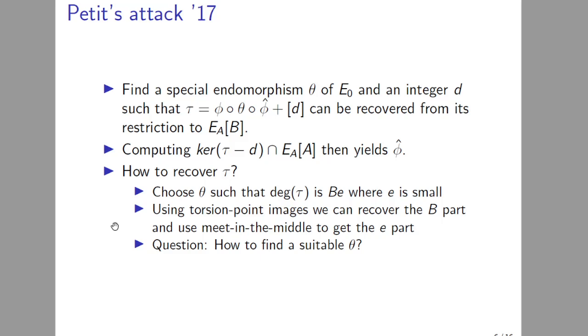The first attack which exploits this extra information was by Petit at 2017 Asiacrypt. Let me briefly recall what the attack does. The main idea is to find a special endomorphism θ of the starting curve E_0 and an integer D such that φ∘θ∘φ̂ + D can be recovered from its restriction to E[B]. And why does this help us? Because then you can compute the intersection of the kernel of τ - D and the A-torsion, which will essentially give you the dual of φ when you know some technical details.